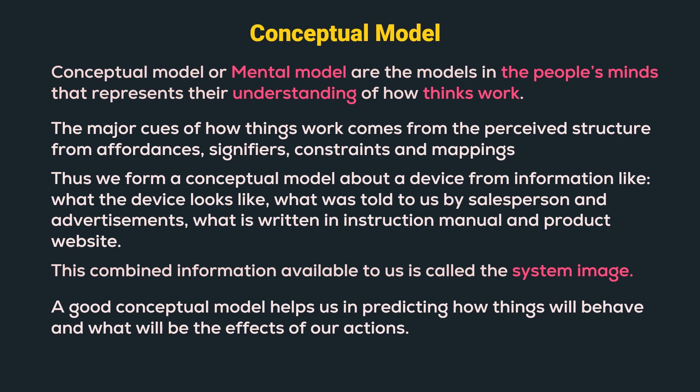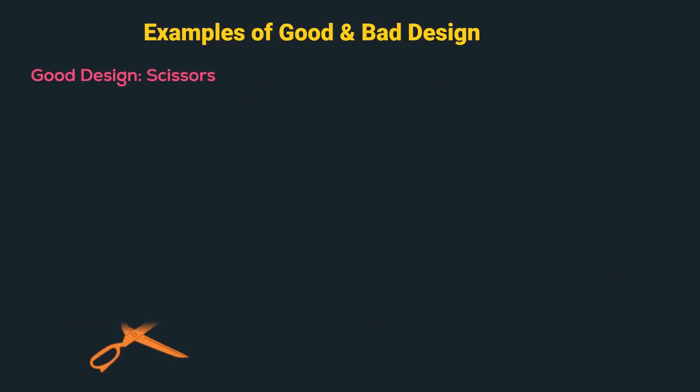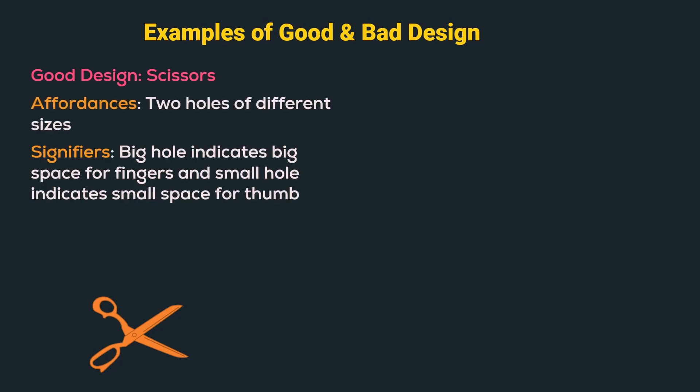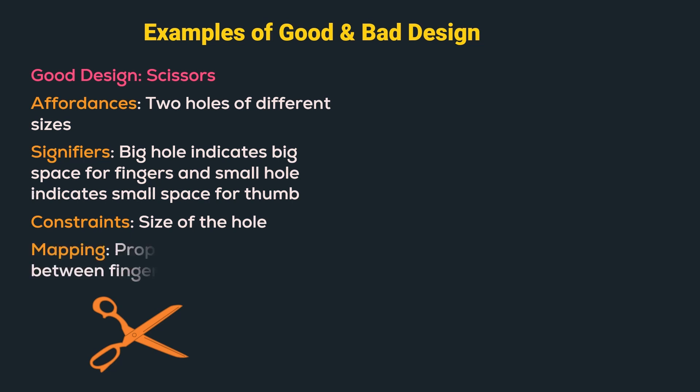We have understood the fundamental principles of interaction. Now let us understand them together using some examples. Let us start with a good design example: scissors. The affordances are the two holes of different sizes. The signifiers indicate the big hole for fingers and the small hole for the thumb. Constraints are the size of the holes, and the mapping provides proper correspondence between fingers and hole size. Thus, scissors satisfy all fundamental principles of interaction and help us form a conceptual model about using them.